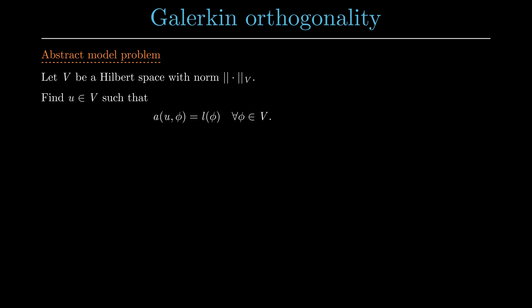In this definition, the bilinear form a and the right-hand side functional l depend on the underlying PDE. In the example of the Poisson's problem, we have H₁⁰ as our function space and the following bilinear form and right-hand side functional.